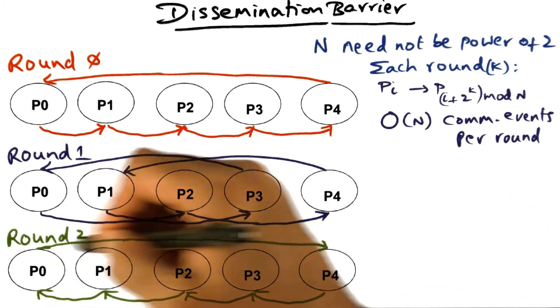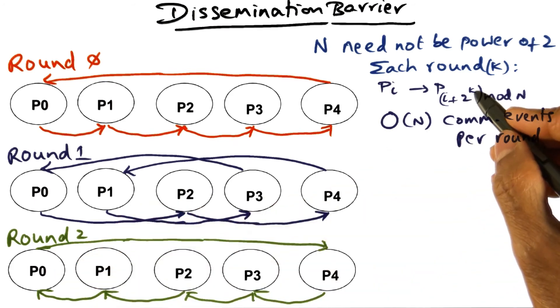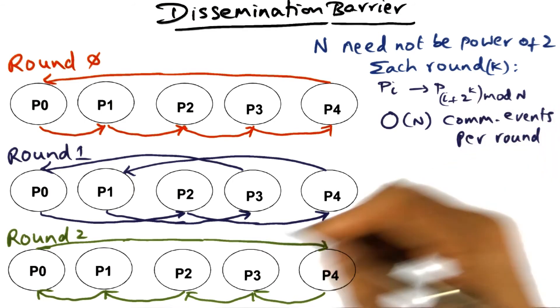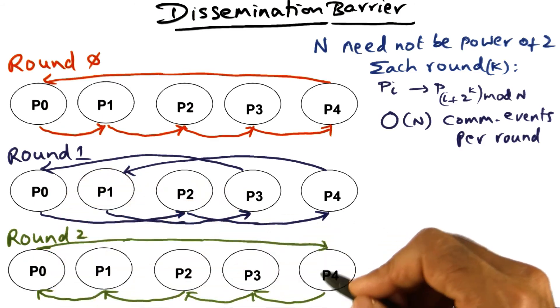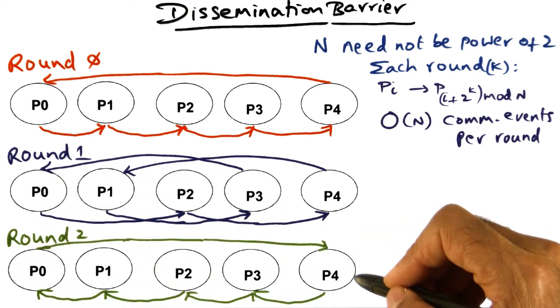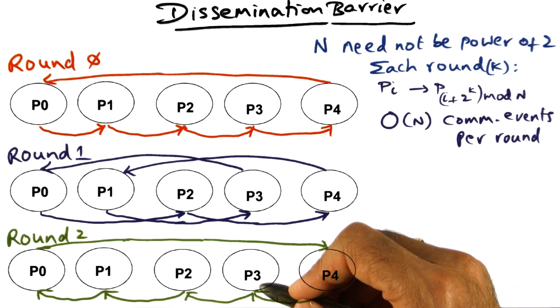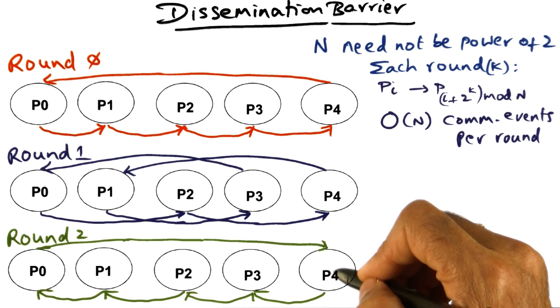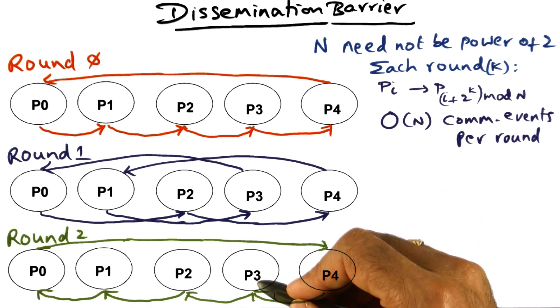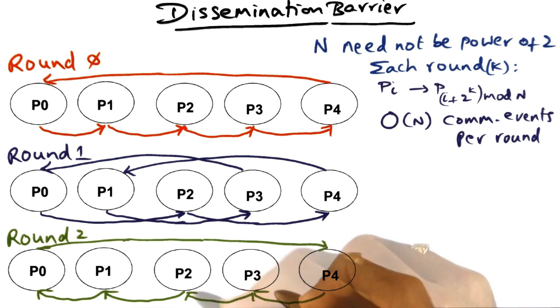So this is the communication that's happening in round 2 where every processor is sending a message to its neighbor who is 4 distant because k equals 2. So just sort of belaboring the point, the gossip in round 2 is over so far as p3 is concerned when it has received a gossip message from its 4 distant neighbor, which happens to be p4, and it has also sent a message to its 4 distant neighbor, p2 in this case.